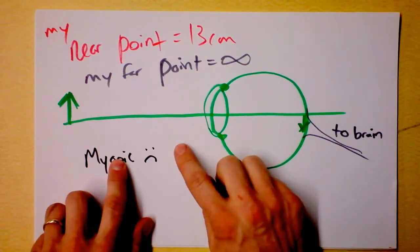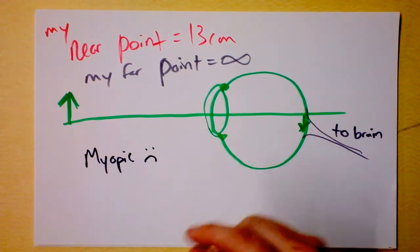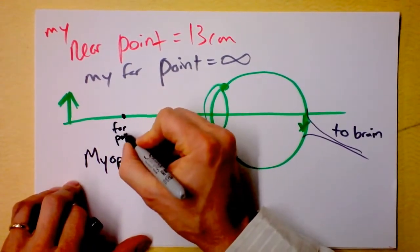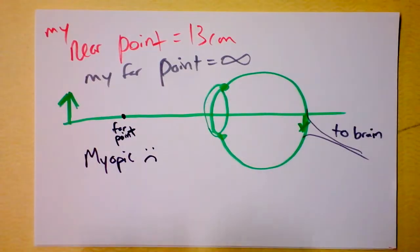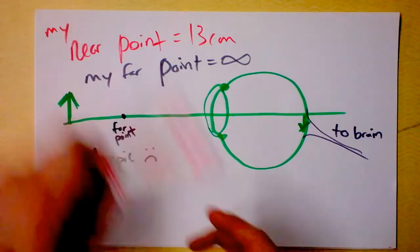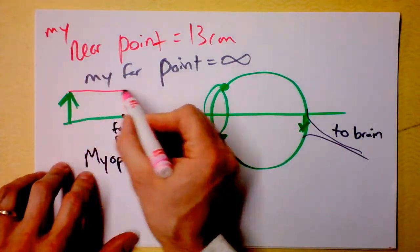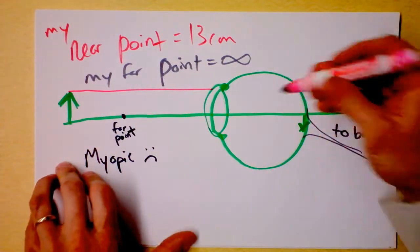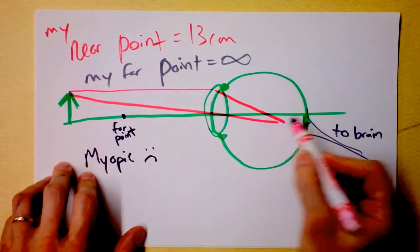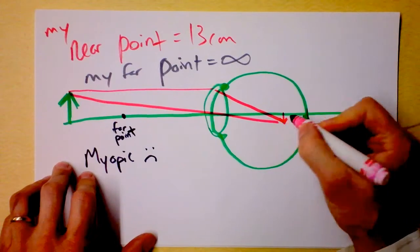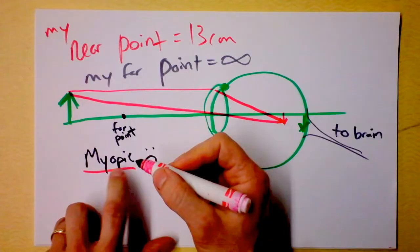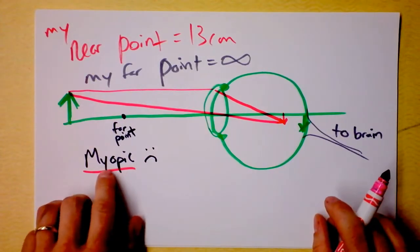The idea of someone who is myopic, the idea is their far point is here for instance. We could just define some random location to be their far point. And if they're looking at something that's beyond the far point, the problem is the rays from that thing come in and they get focused too early. So these rays form an image right here.